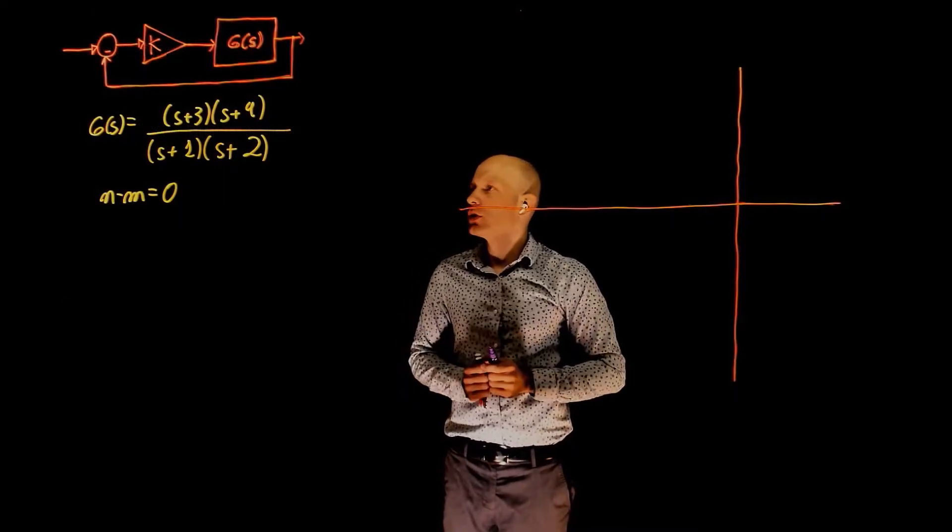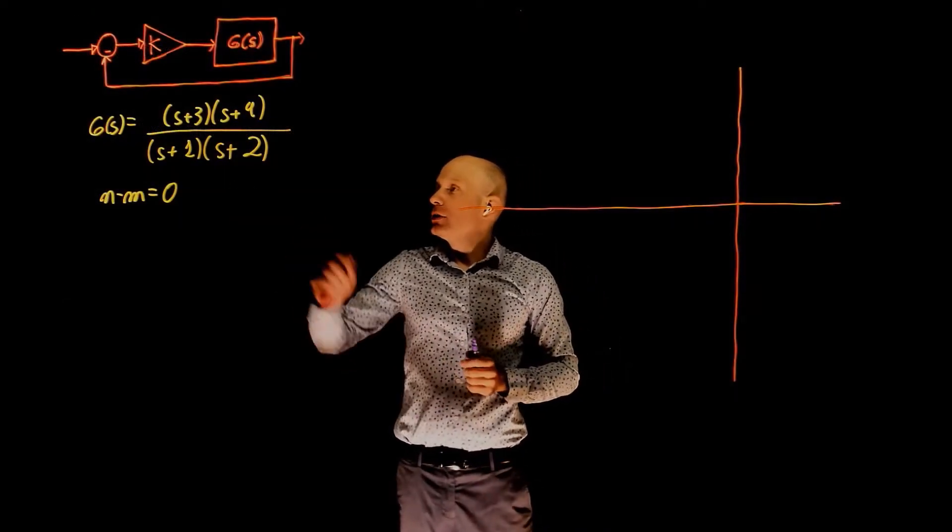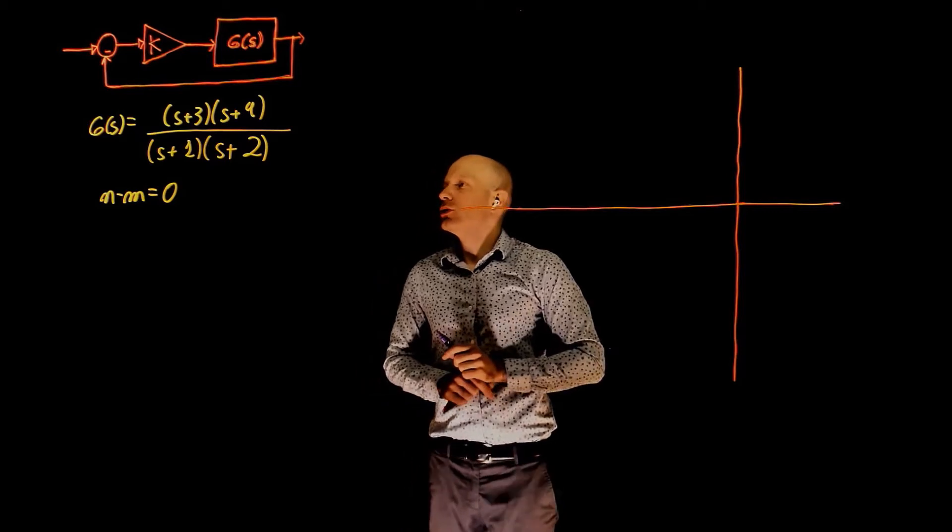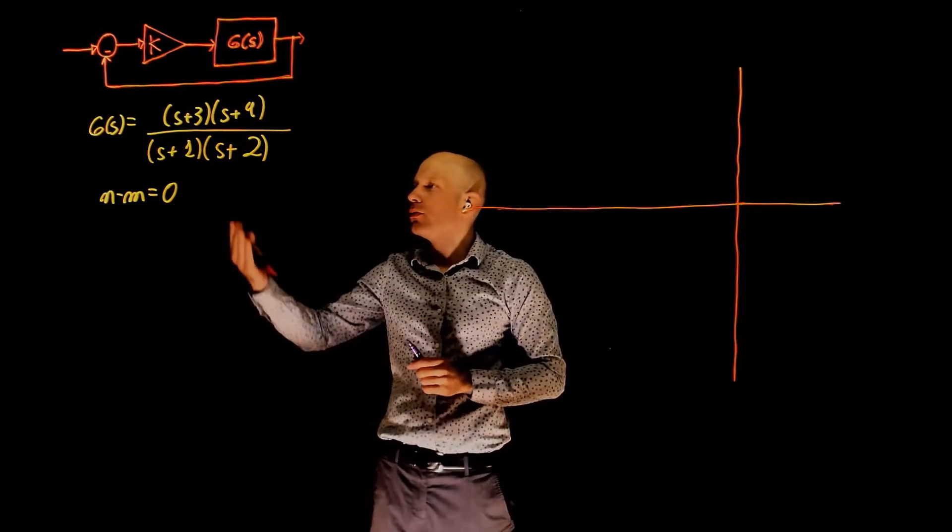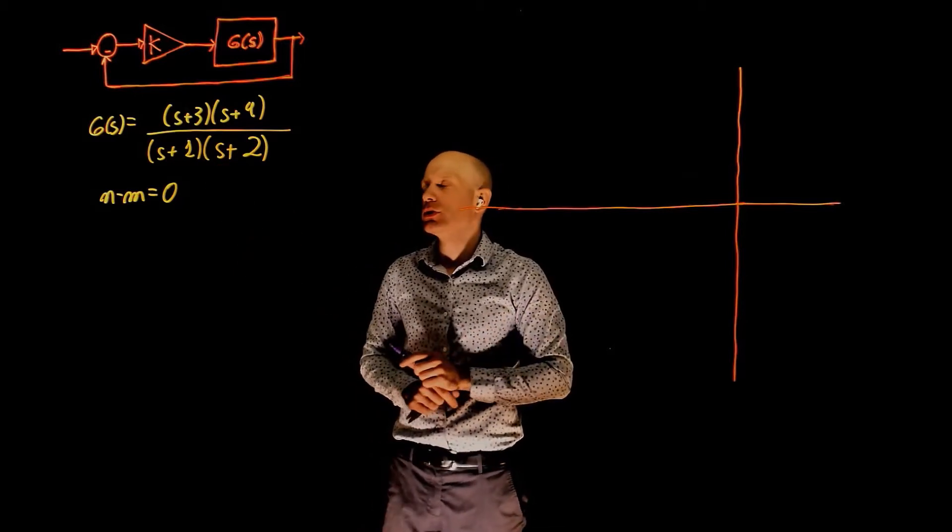Here we have another example of root locus. Our plant transfer function has two poles and two zeros, which means that n minus m is zero. All poles have a zero to go to. There is no excess of poles or zeros.